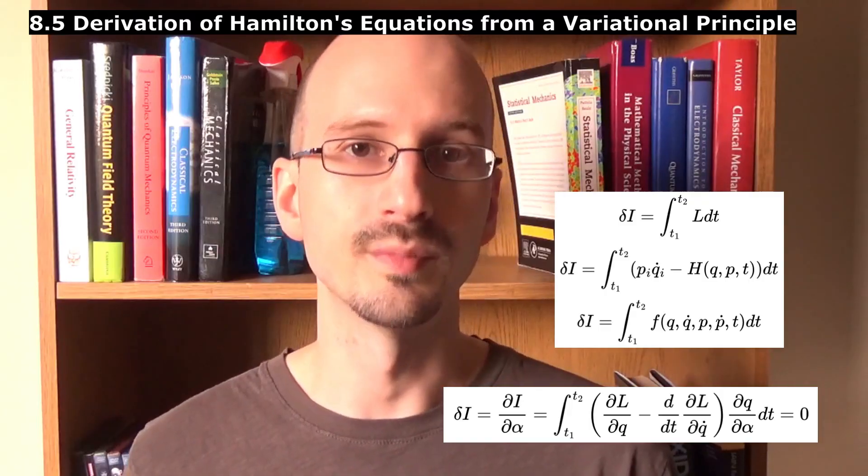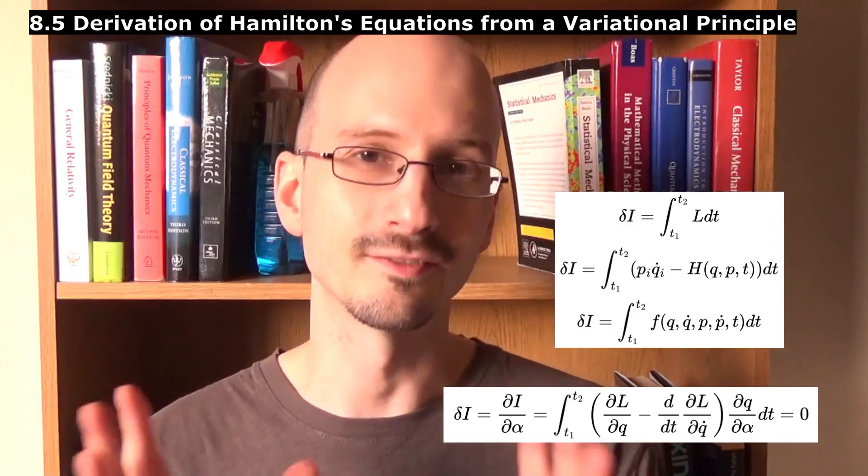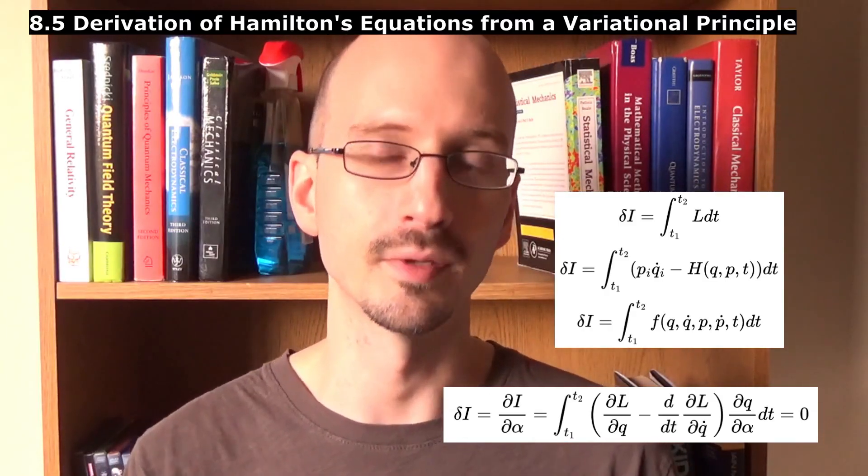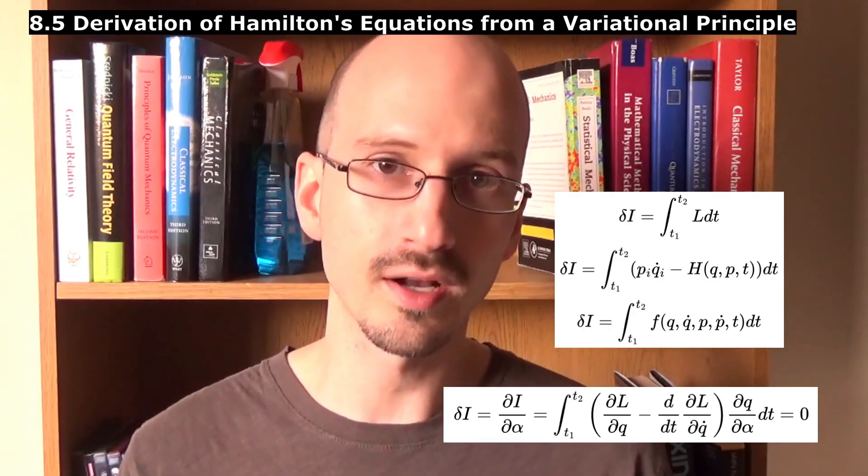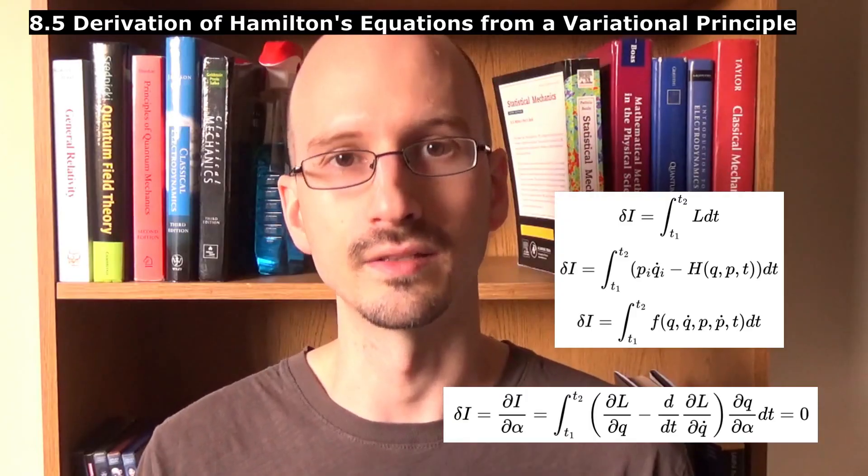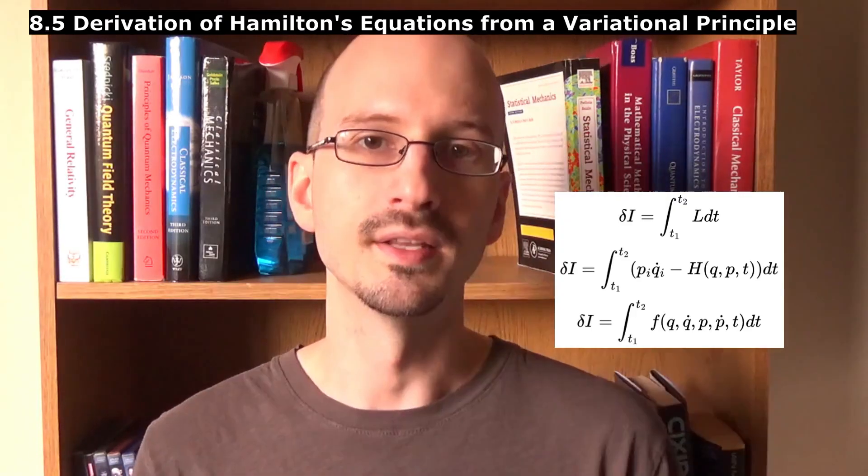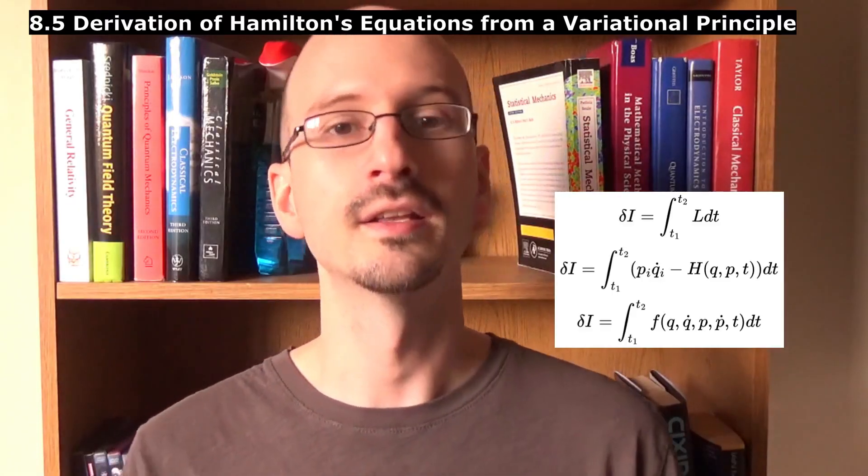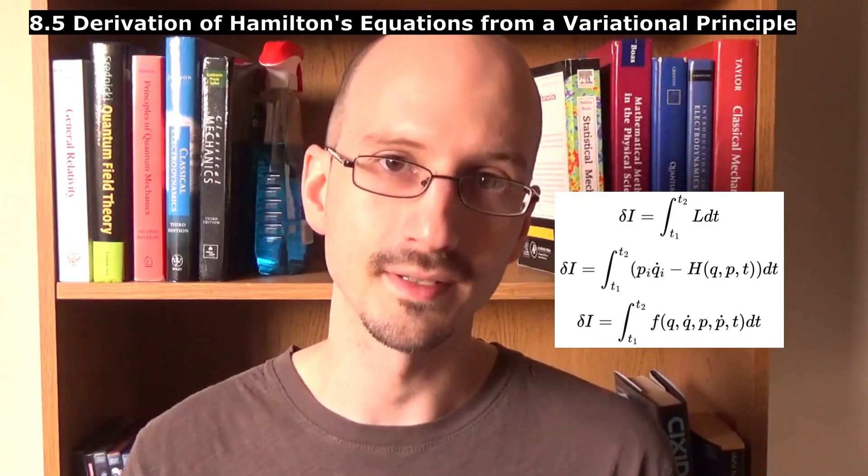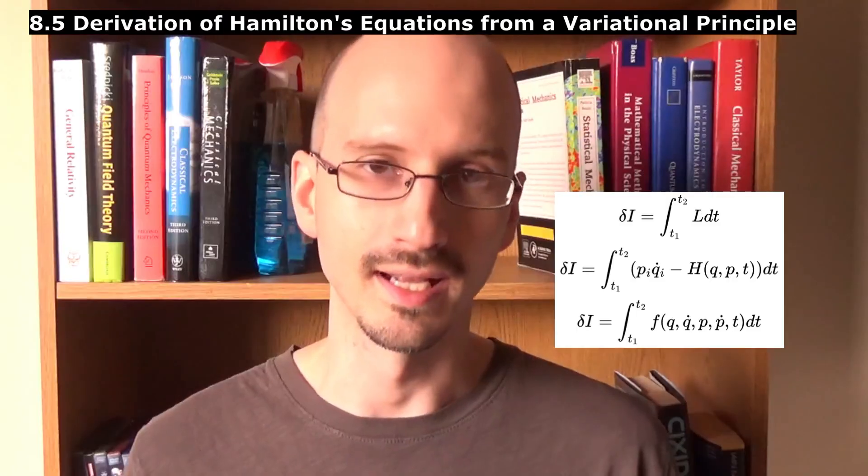But we can find the Hamilton equations of motion by substituting the conversion between Lagrangian and Hamiltonian into the same process that led us to find the Lagrangian equations of motion. This gives us a function of the coordinates, the velocities, the momenta, the change in momenta, and time.